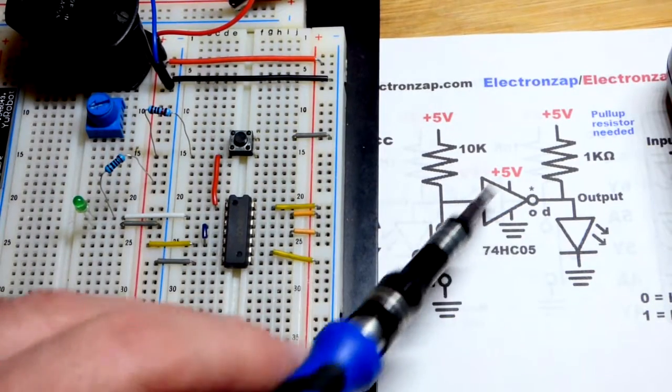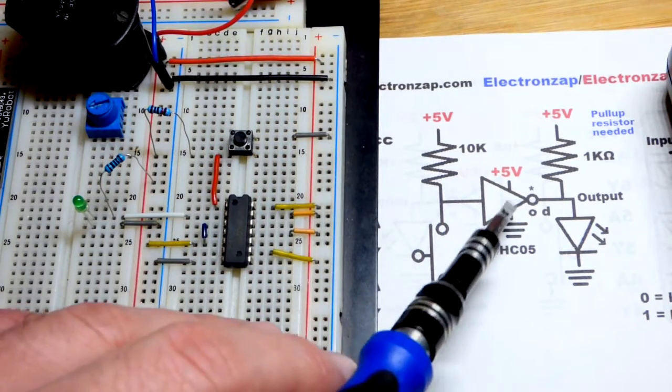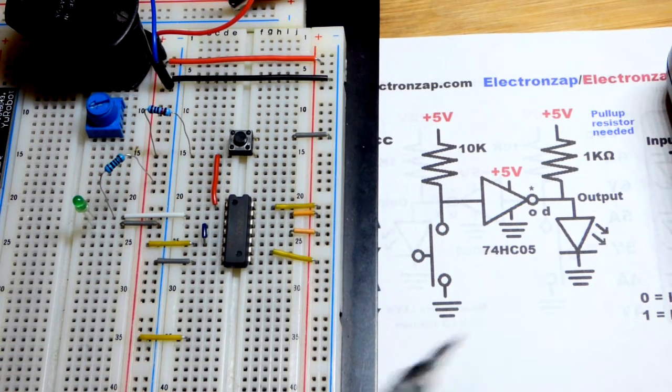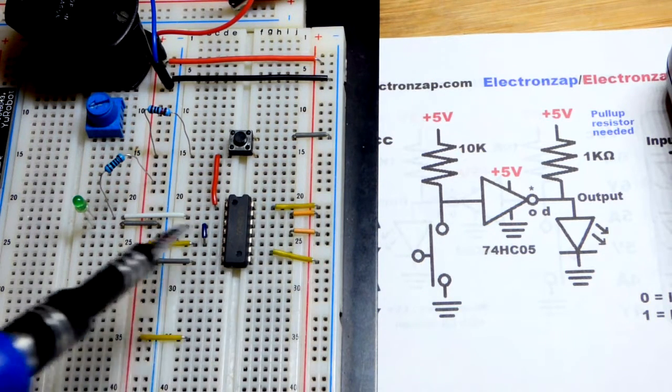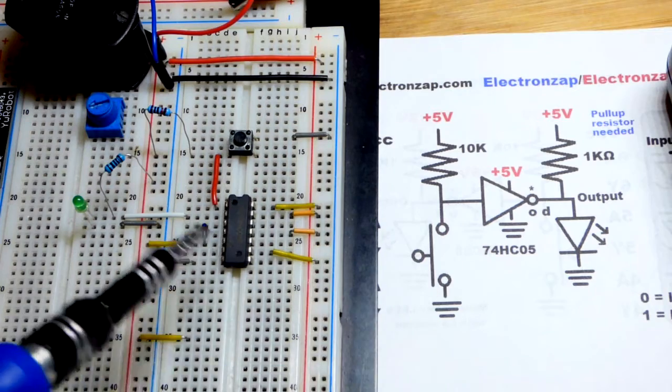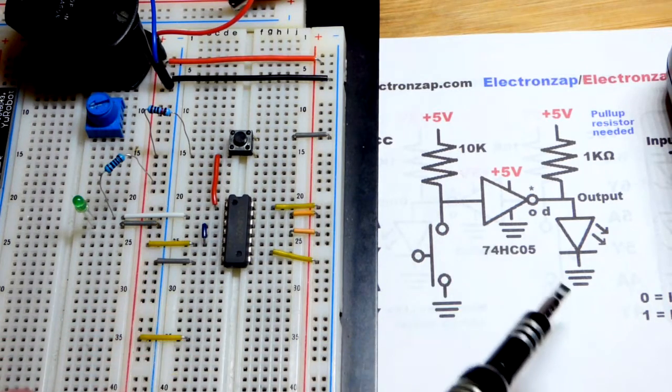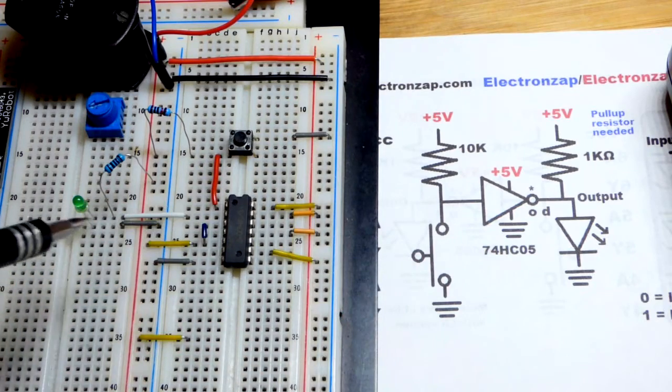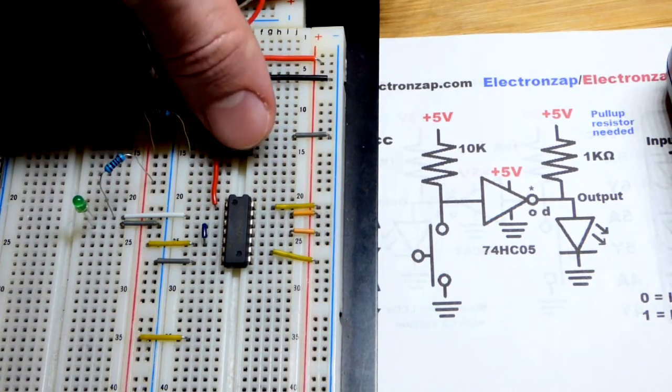Now in this video we're going to go over this circuit here. There's actually six of these on this integrated circuit, the 74HC05. We are tying the inputs high so that those ones don't do anything. What we have here is we actually have a high input right now and a low output. That's why the LED is off.